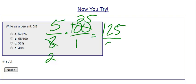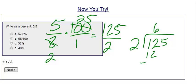2 times 1 is 2, and then I need to divide this, 125 divided by 2. 2 goes into 12 six times with nothing left over, bring down my 5.